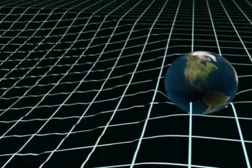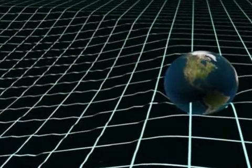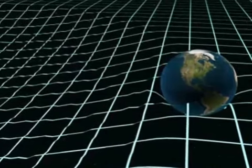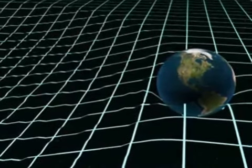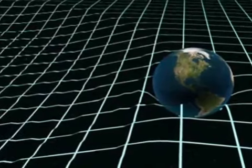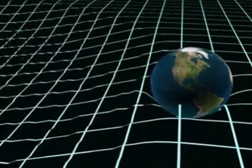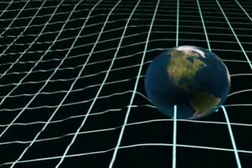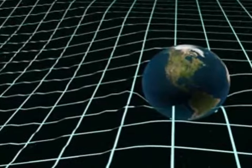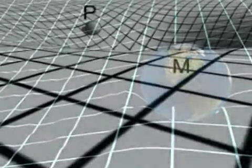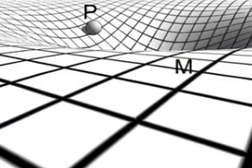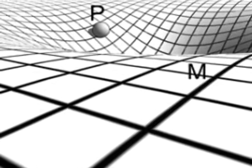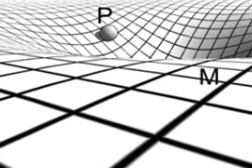Predicted in Einstein's General Theory of Relativity, gravitational waves are disturbances in the curvature of spacetime caused by the motions of matter. Propagating at or near the speed of light, gravitational waves don't really travel through spacetime — it's the fabric of spacetime itself that's oscillating. Although gravitational waves pass straight through matter, their strength weakens proportionally to the distance traveled from the source.